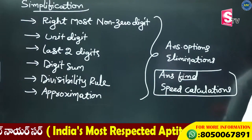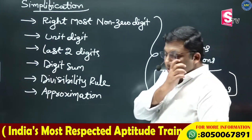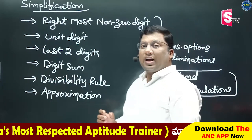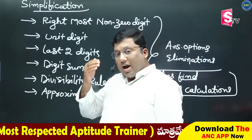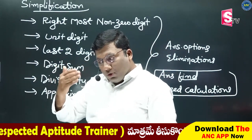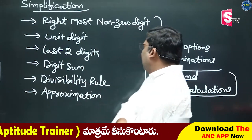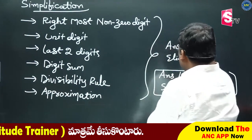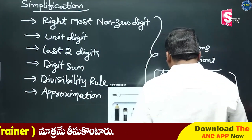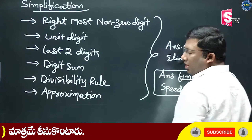Speed calculations. Answer kanukkovali ya nannu kundte, use chesee padatai. Speed calculations. Answer option la nunchi, idhi tappu, idhi tappu, idhi tappu, anini cheppaya padatai. Right answer option elimination approach. Answer options elimination approach.